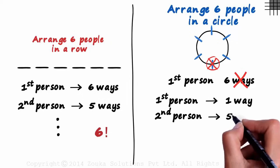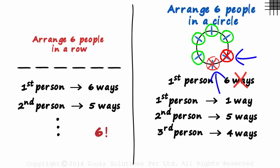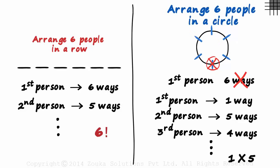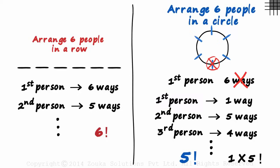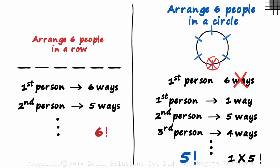So the second person can be seated in five different ways. Similarly, the third person can be seated in four different ways, and this goes on until everybody is seated. The answer will be one multiplied by five factorial, which equals five factorial. This is the logic behind subtracting one from n — the first person can be seated in just one way. In a row, each slot is different for the first person, but in a circle, each position is the same. So remember: n people can be seated in a circular fashion in n minus one factorial ways. Understanding the concept is better than just memorizing the formula.